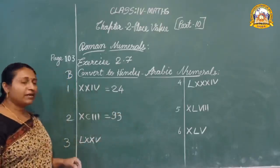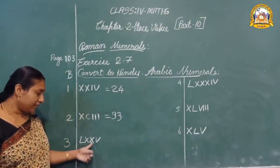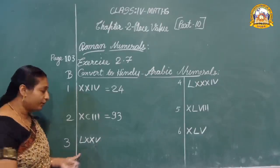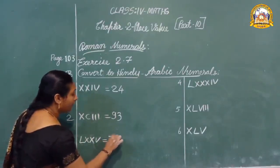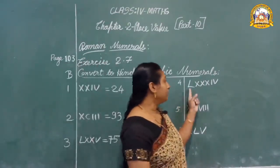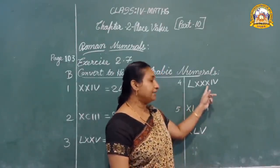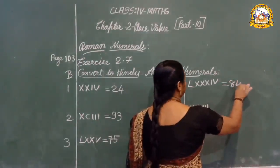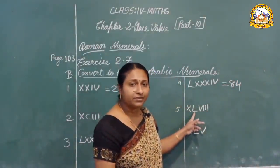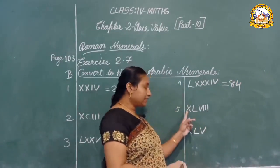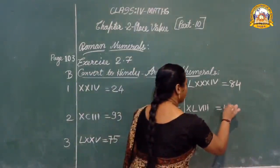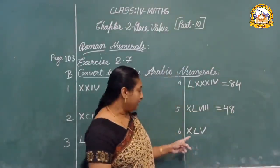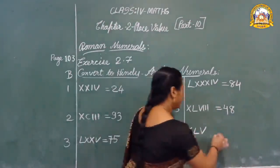Here, L double X — L for 50, then 60, 70 — so LXXI is 70 plus 5, that is 75. Next: L XXX — 50 plus 30 equals 80. Then 80 plus 4 is 84. Next, XL means 40 — fifty minus ten. So XL plus VIII is 48. And XL plus V is 45.